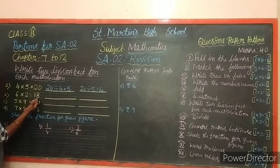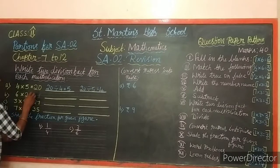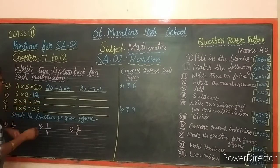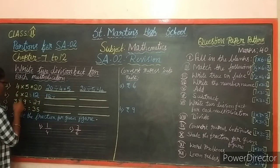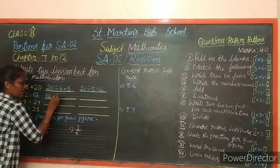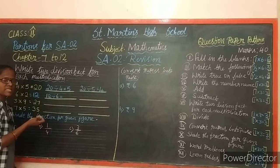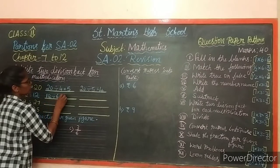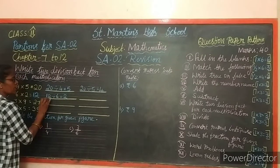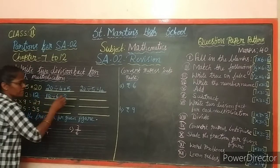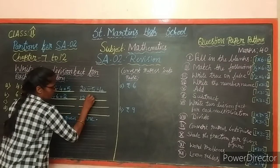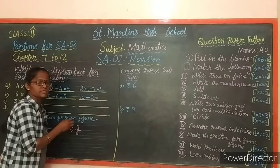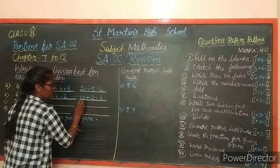Next: 6 twos are 12. First division fact: 12 divided by 6 - using the 6 times table, 6 twos are 12, so quotient is 2. Second division fact: 12 divided by 2 - using the 2 times table, 2 sixes are 12, so quotient is 6.